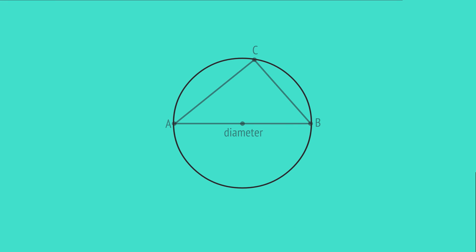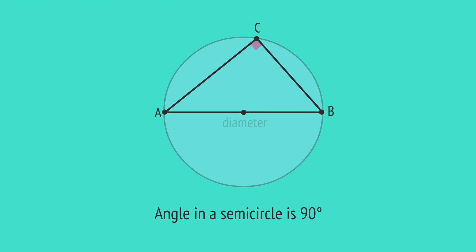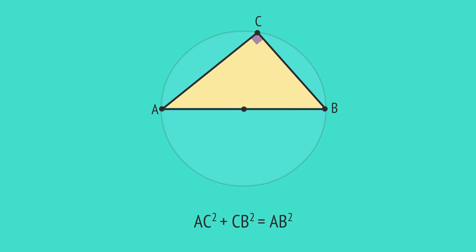Any cords connected to a diameter will make a right-angled triangle, often stated as the angle in a semicircle is 90 degrees. So we can also apply Pythagoras to these lengths.